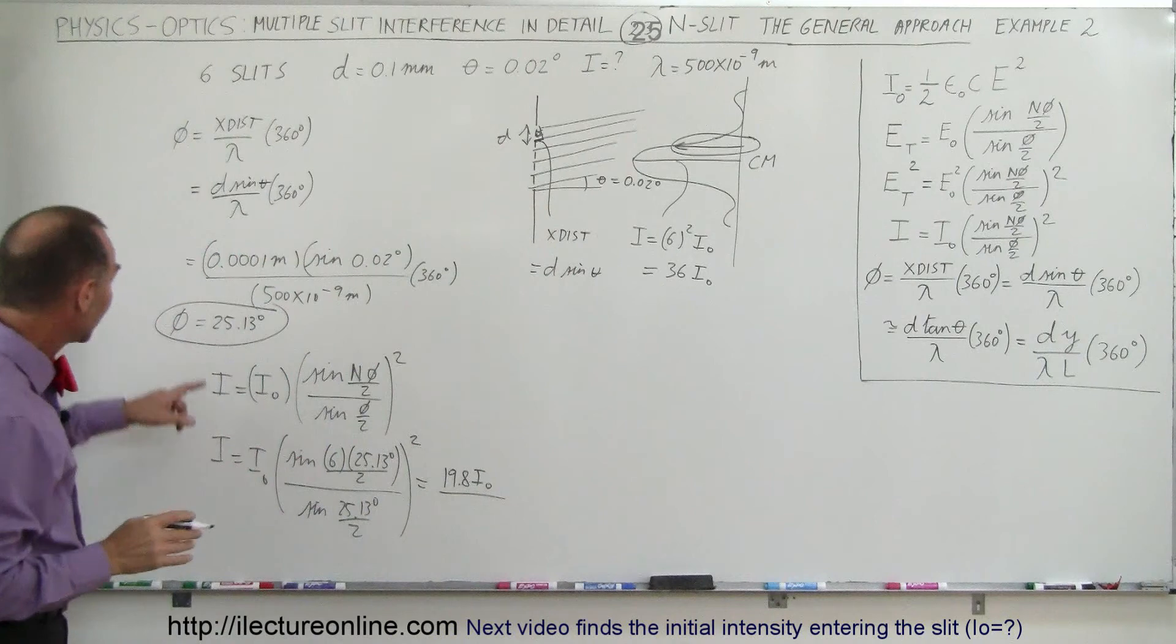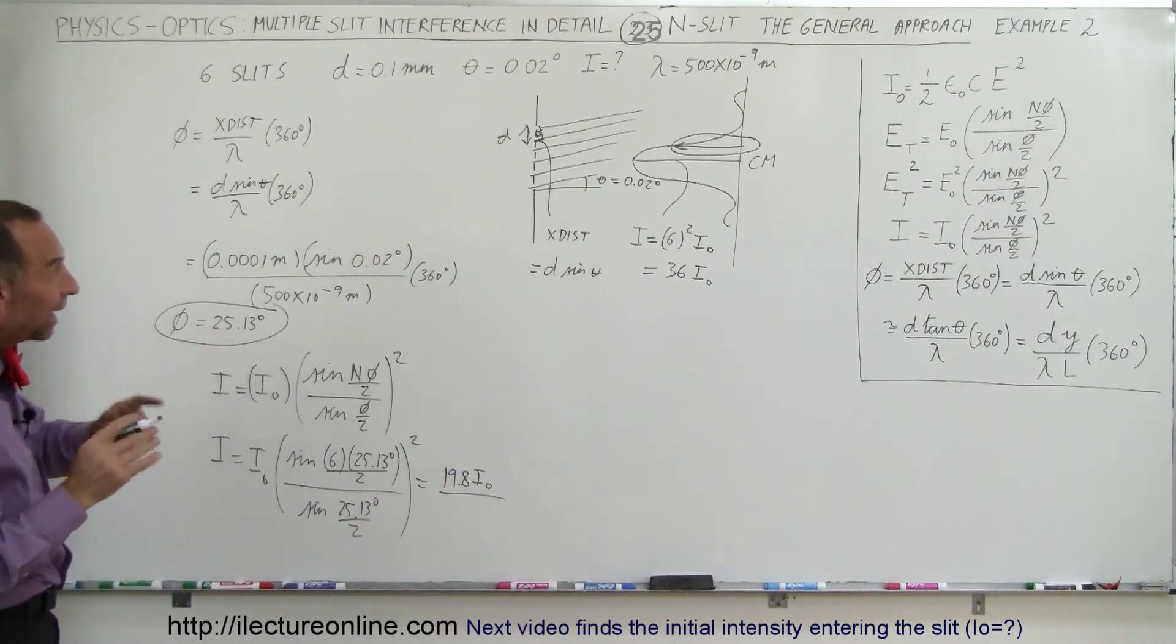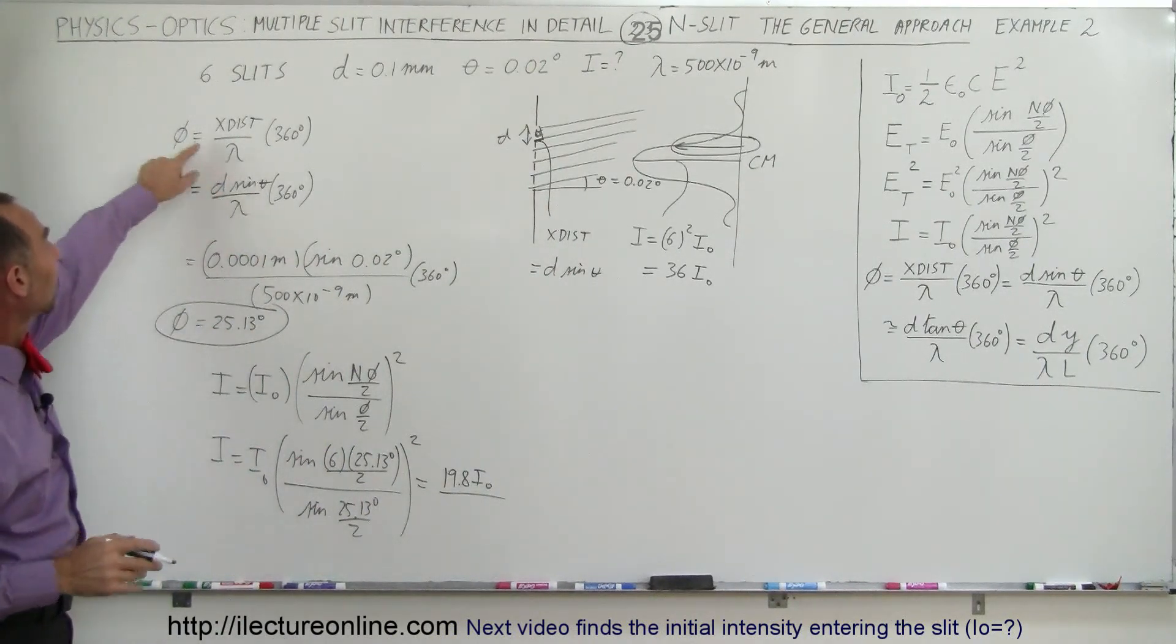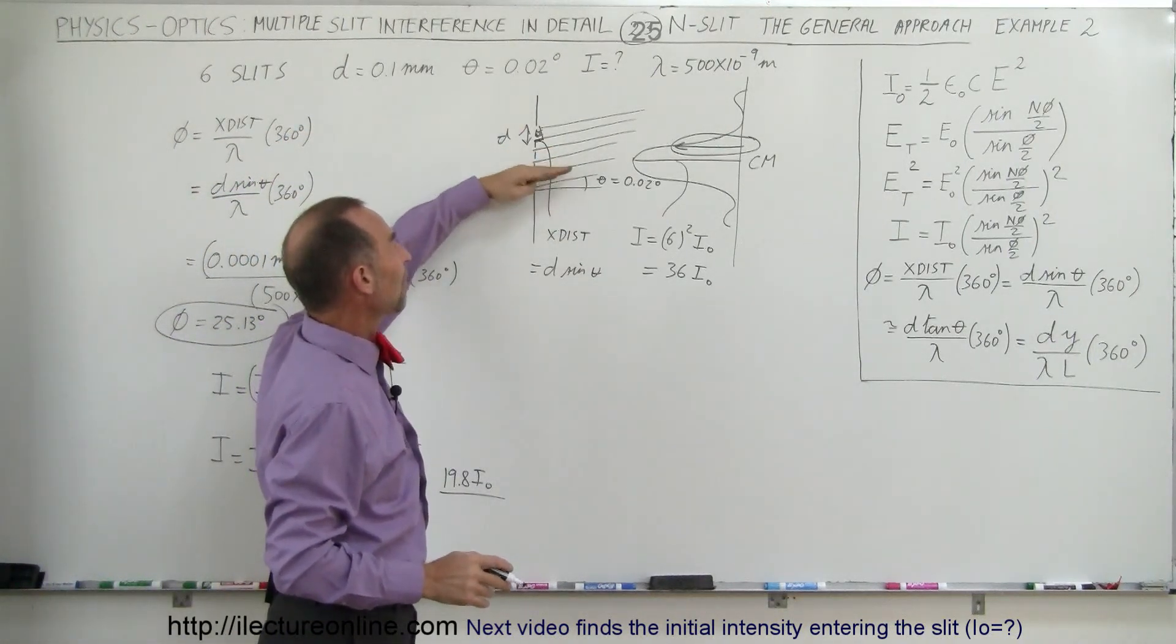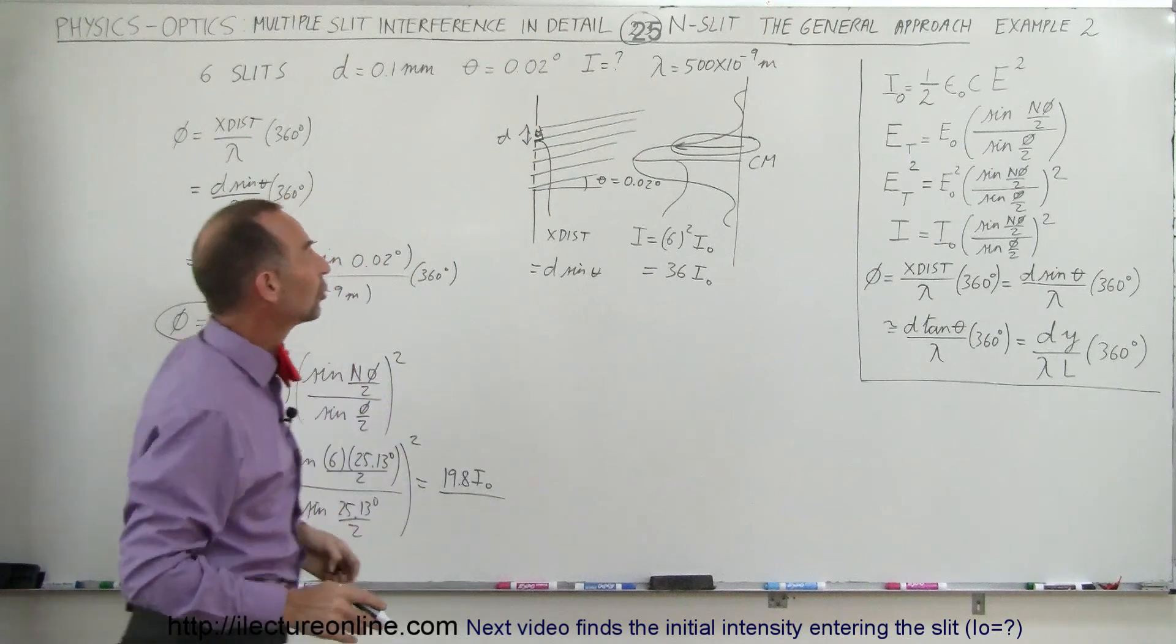...so it looks like we're probably somewhere in this neighborhood, and that would be the intensity that we just found when the phase angle is 25.13 degrees. And we found the phase angle by realizing that the distance between slits is 0.1 millimeter and that the angle that we're looking away from the center max is 0.02 degrees.